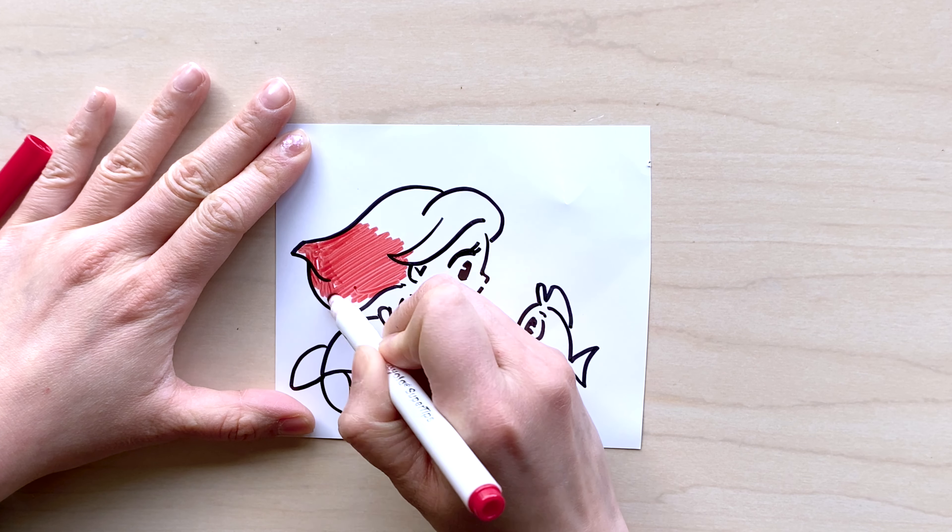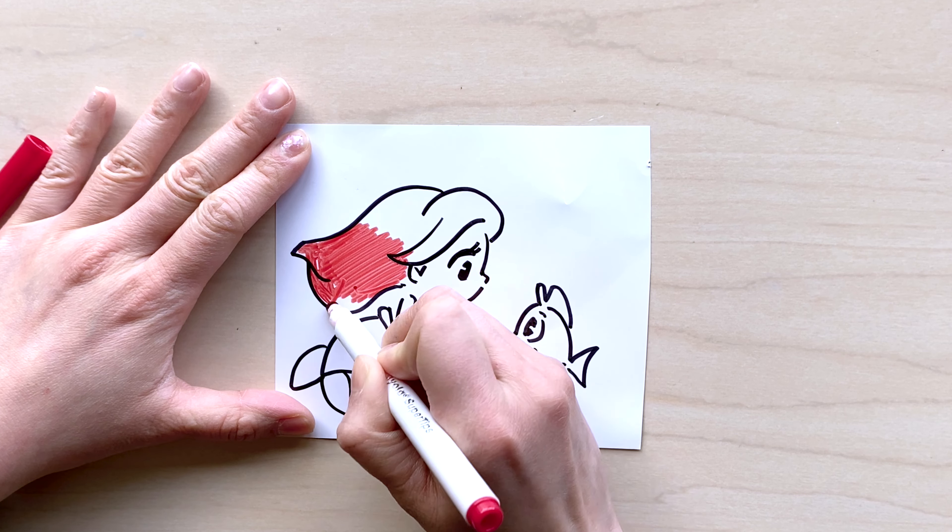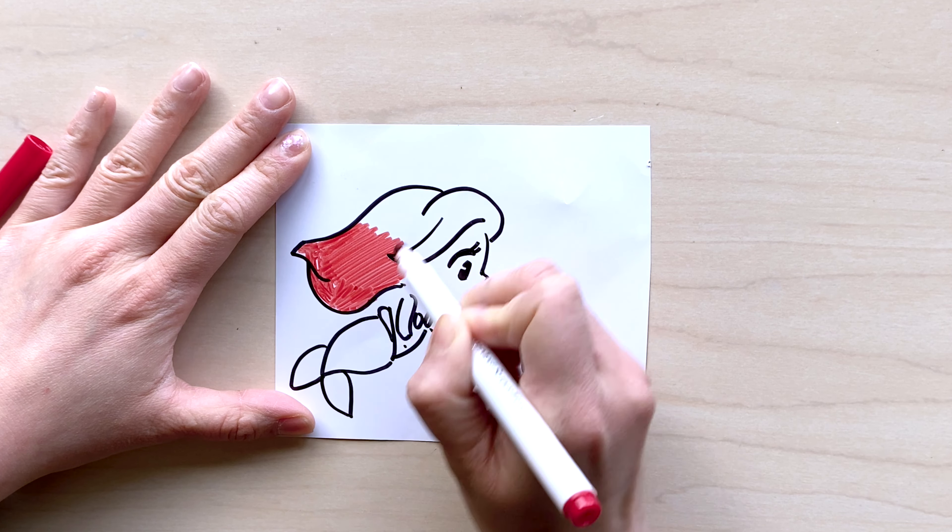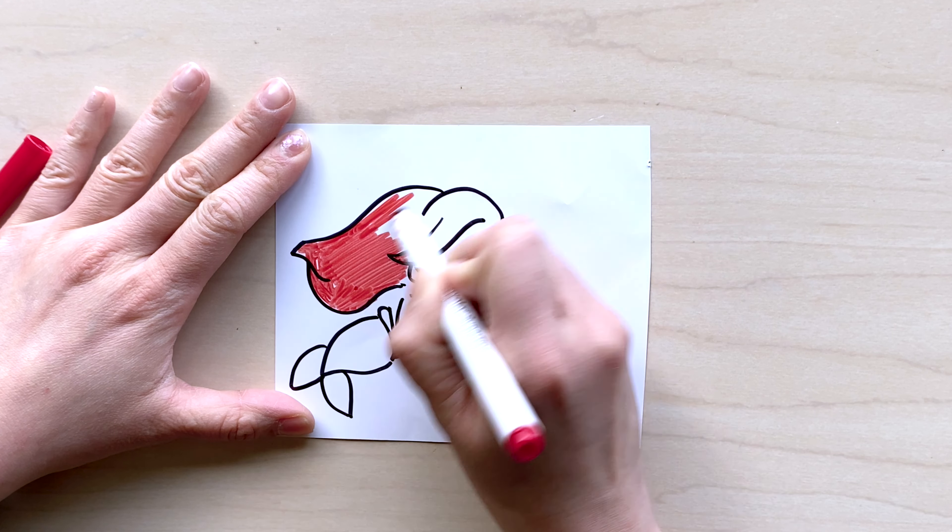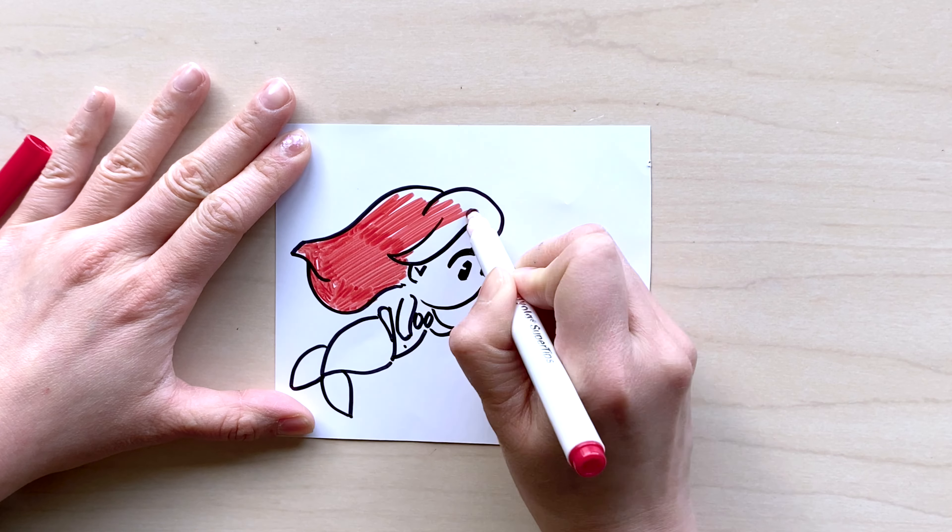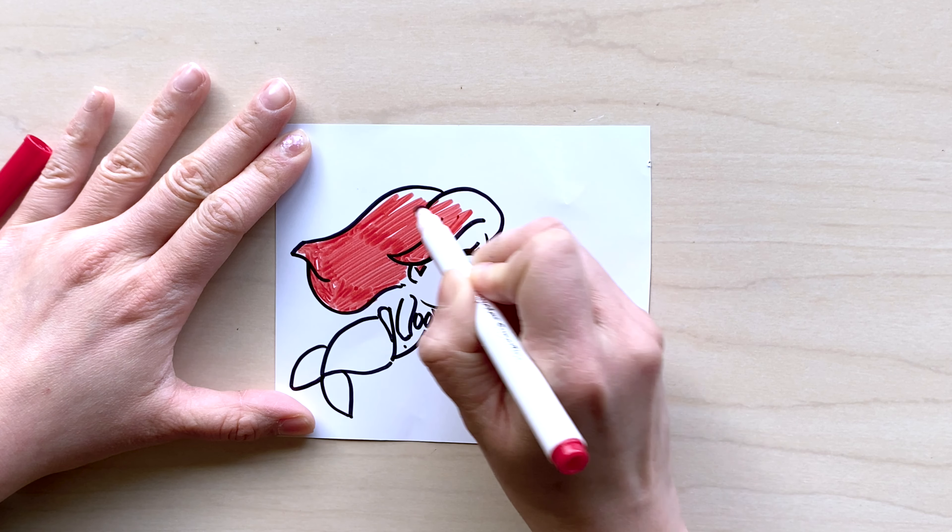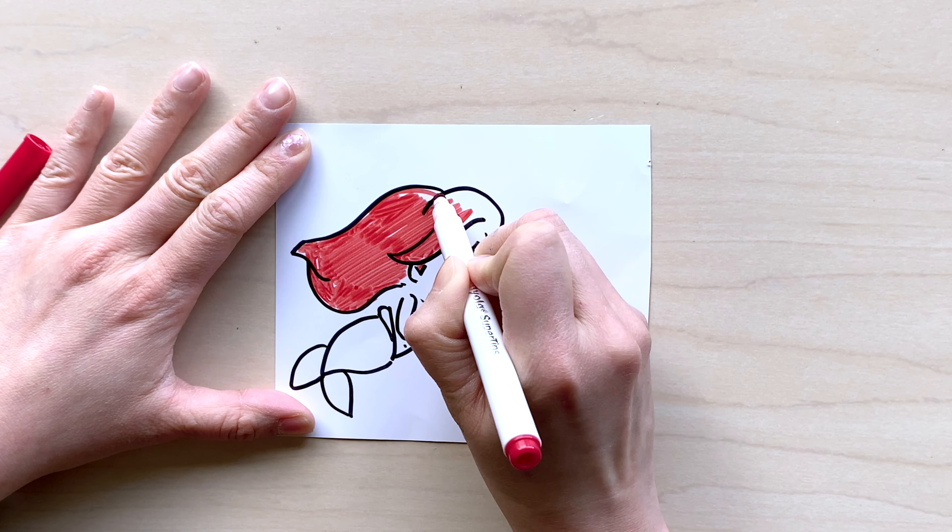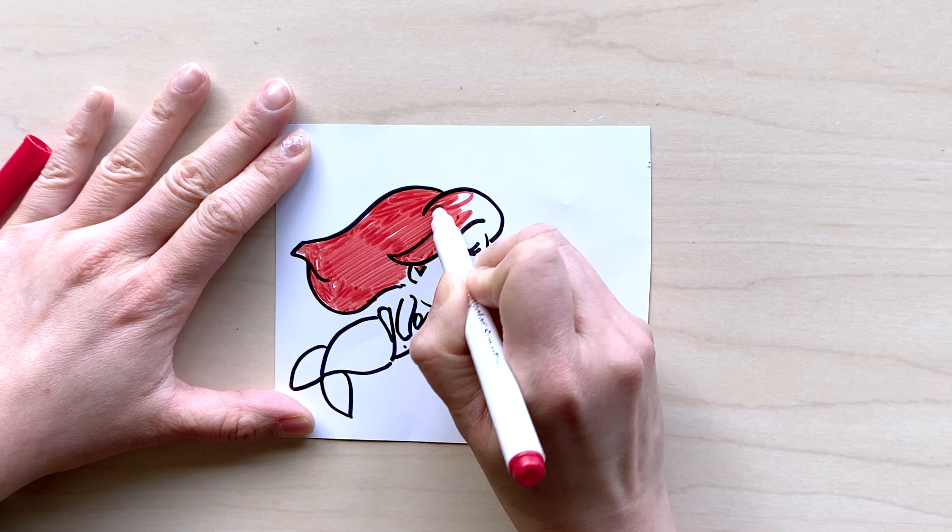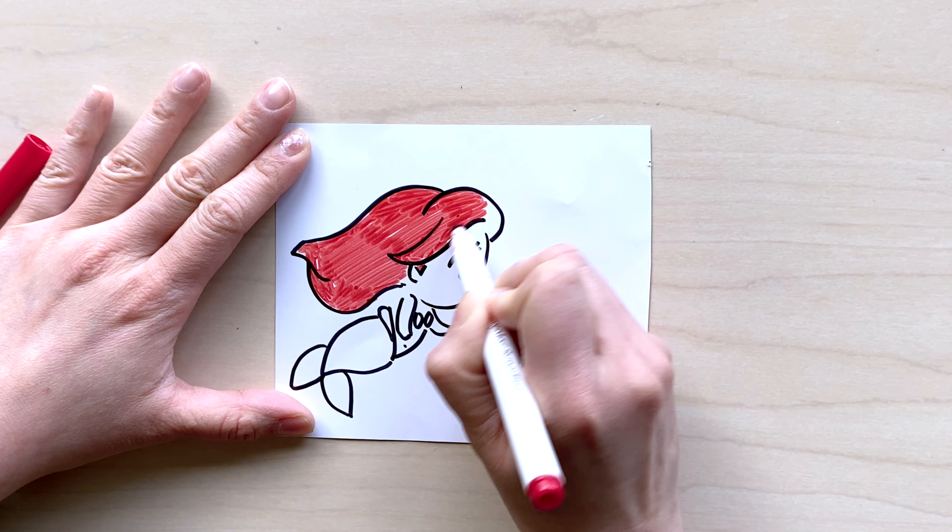I'm just using my red marker to color in most of Ariel's hair. I try my best to color within the lines and just making sure I don't have white space. Certainly try my best—it's not perfect, but that's okay. I really enjoy the process of drawing and coloring as well.